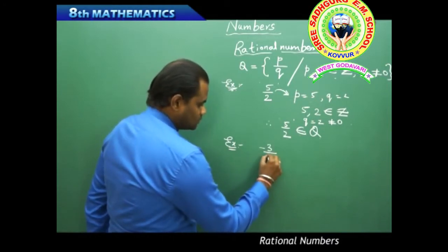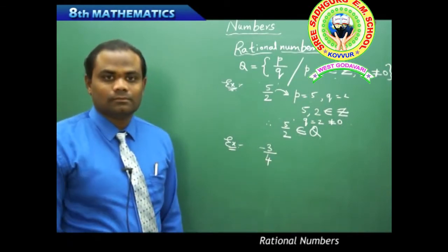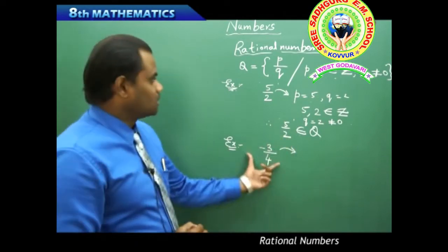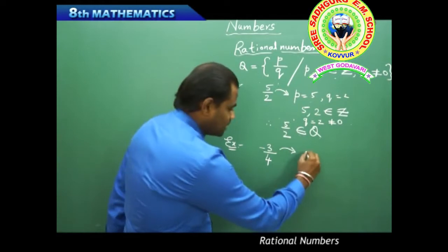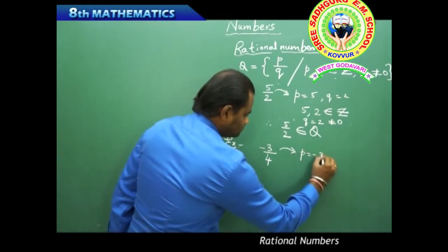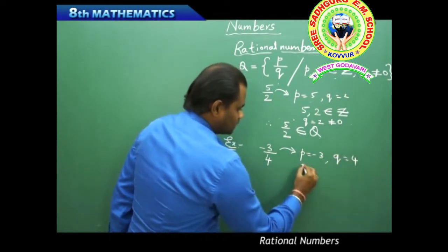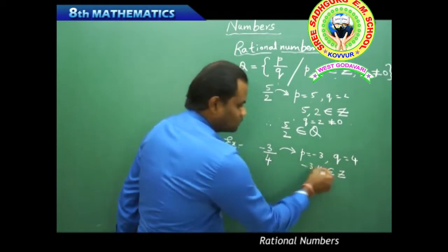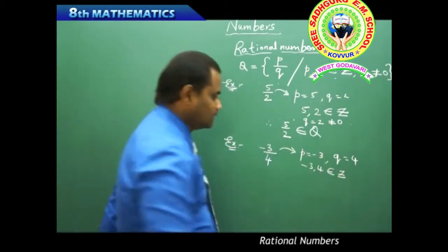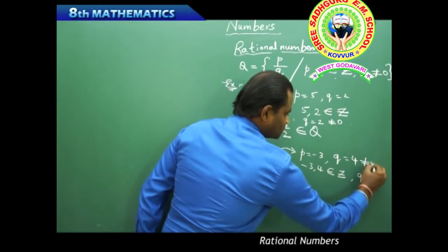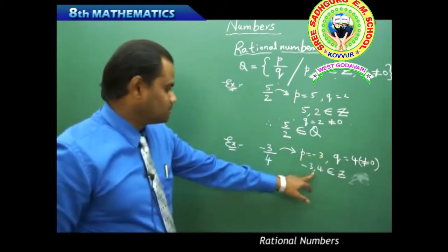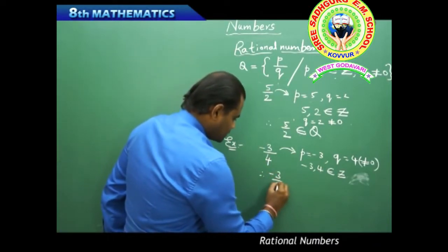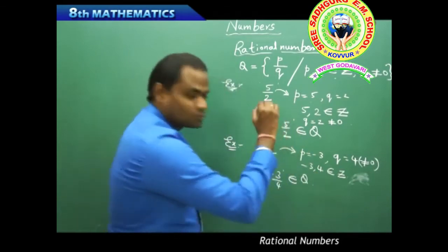Another example: is minus 3 over 4 a rational number? Comparing with P/Q form, P is minus 3 and Q is 4, where minus 3 and 4 belong to Z because even negative numbers are integers. And Q equals 4 is not equal to 0. Both conditions are satisfied, so minus 3/4 belongs to Q.